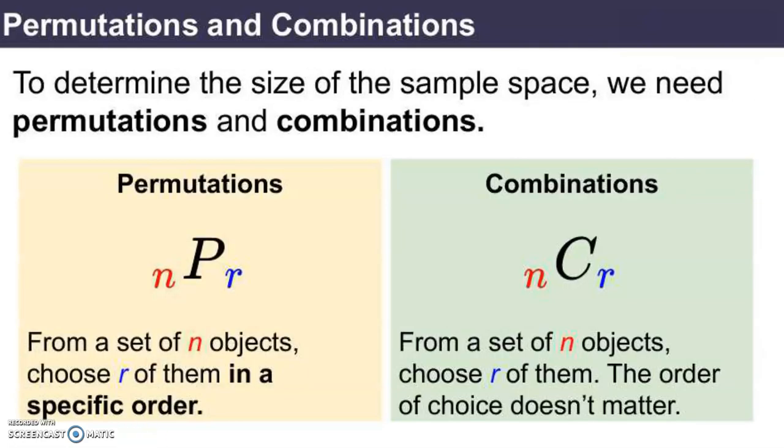So to determine the size of the sample space in scenarios like these, where we're choosing a subset of some given set, we need to use either permutations or combinations. Now the notations we use for these two concepts are right here. For permutations, we're going to use this notation nPr, N permutations,